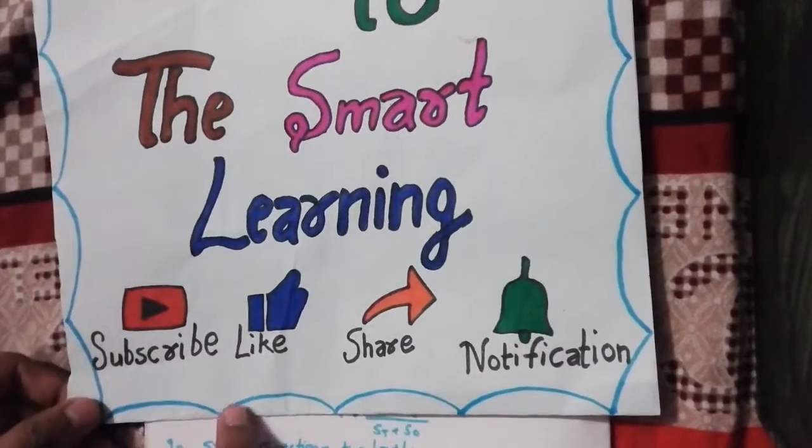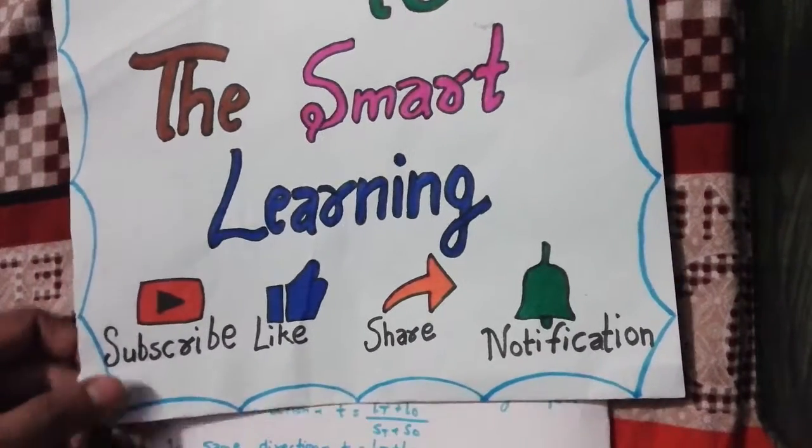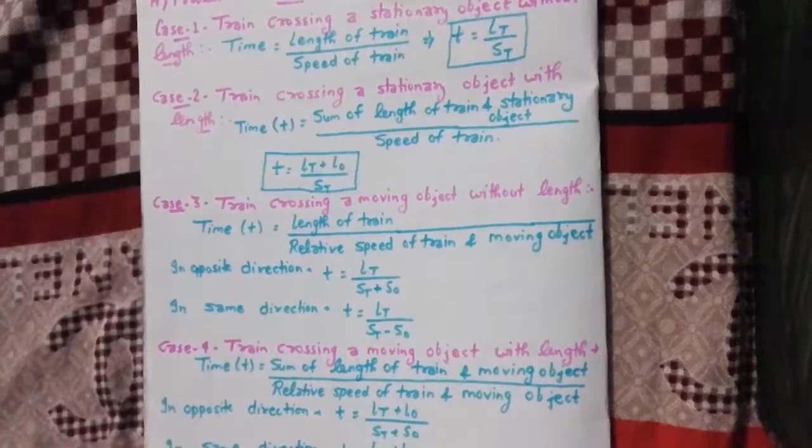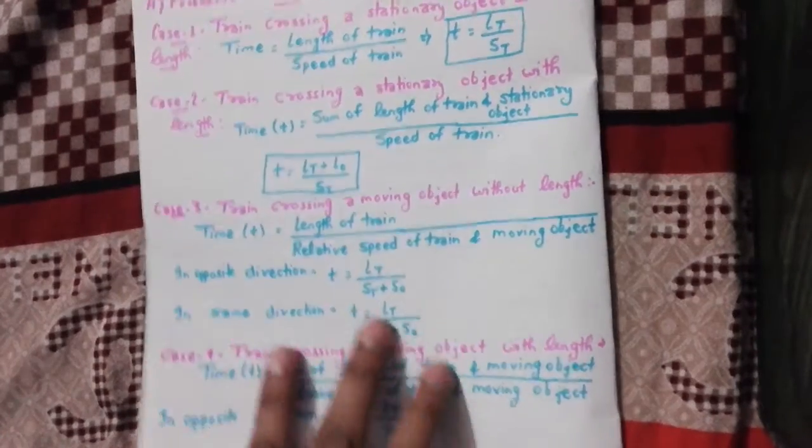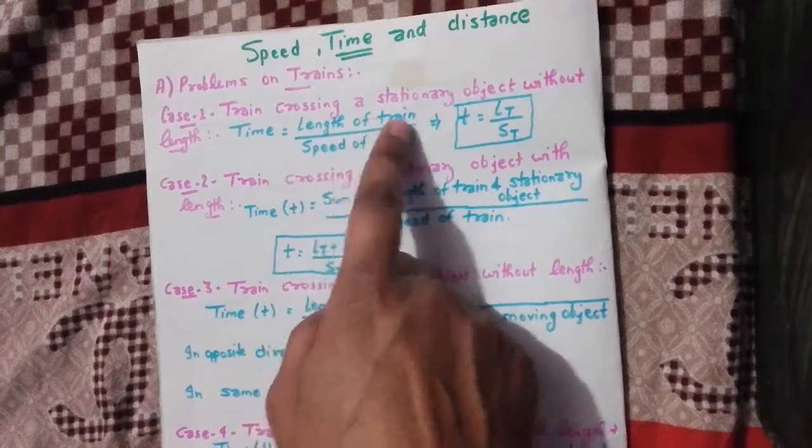Hi guys, welcome to the Smart Learning. Please subscribe, like, share, and for notification press bell. Today our topic is speed, time and distance. So in that, first of all, problems on trains.